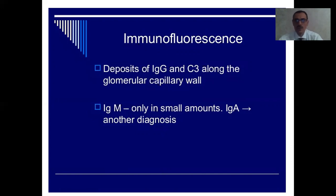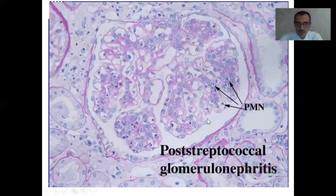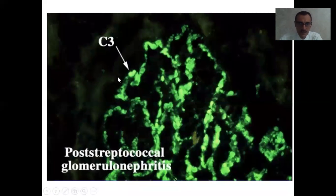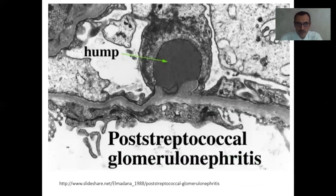Immunofluorescence is also a very useful method in pathology. For example, deposits of immunoglobulin G and complement C3 along the glomerular capillary wall, immunoglobulin M only in small amounts, and immunoglobulin A in another diagnosis. Here I showed you neutrophils in post-streptococcal glomerulonephritis under light microscopy. When we use immunofluorescence methods, it highlights complement C3 in the renal glomeruli, and we can easily confirm the diagnosis of post-streptococcal glomerulonephritis. Another electron microscopy diagnosis of post-streptococcal glomerulonephritis is also shown.